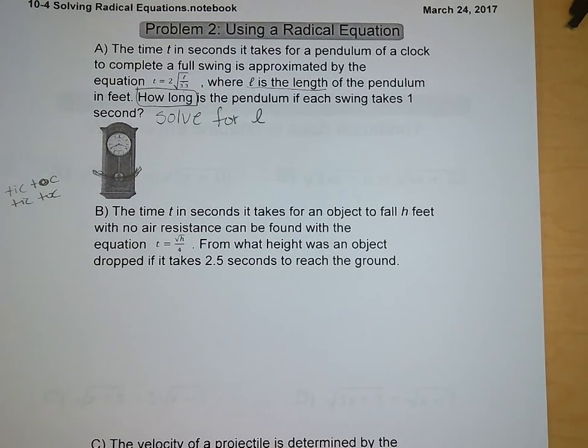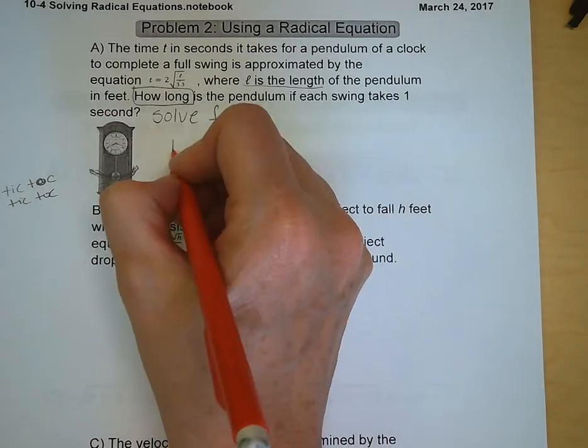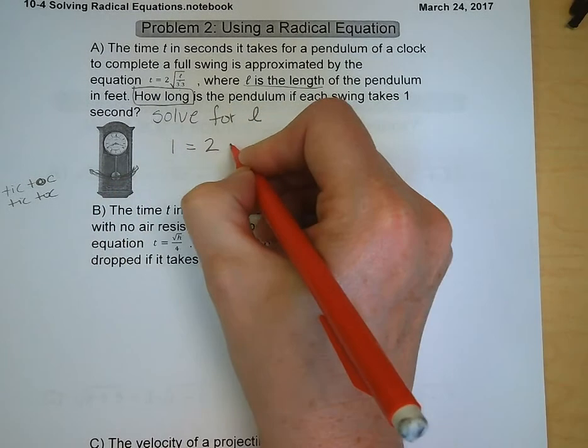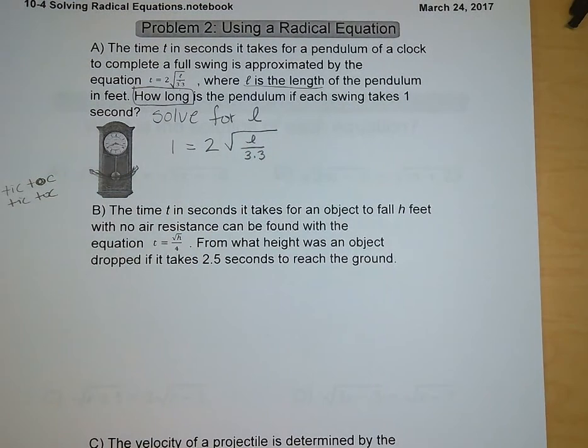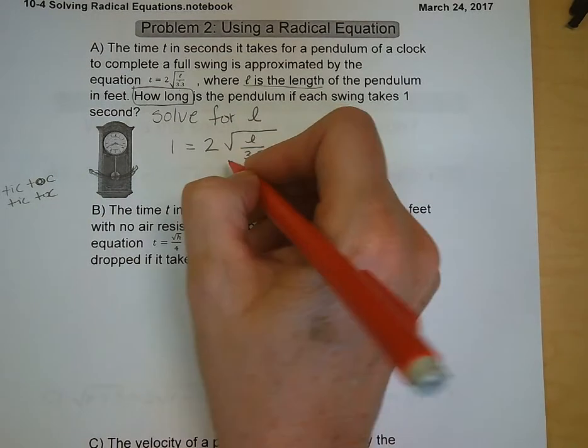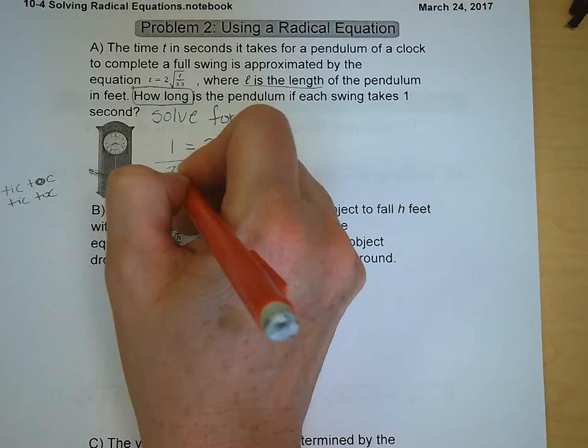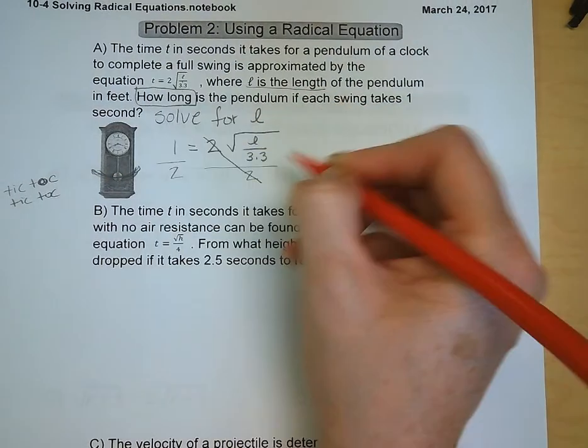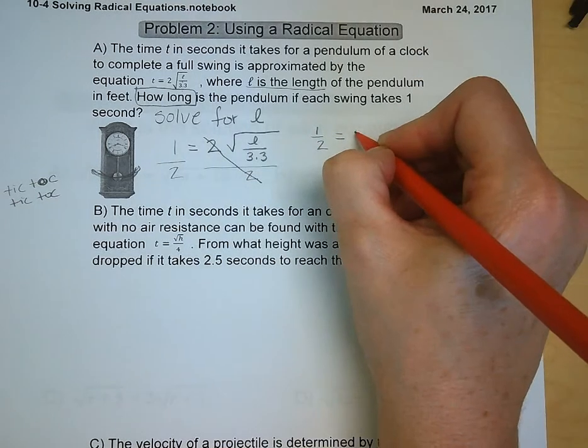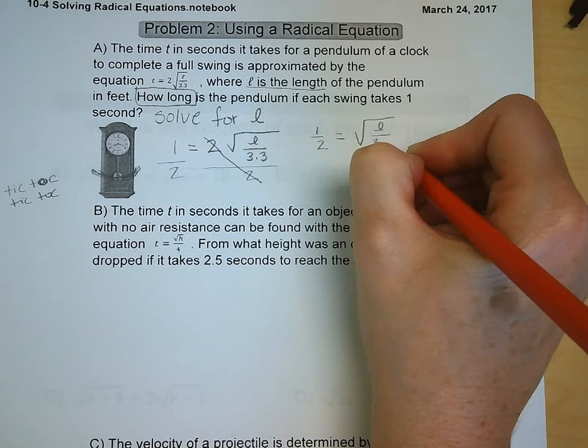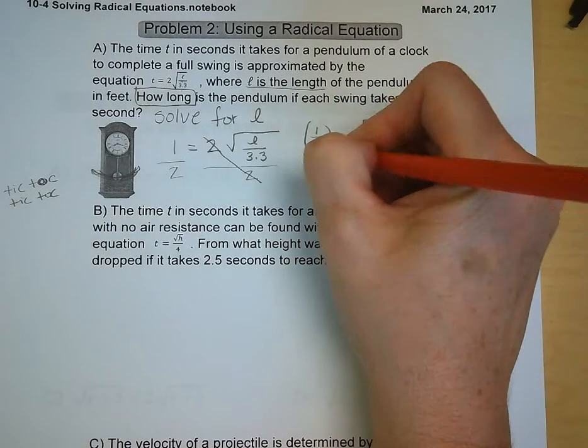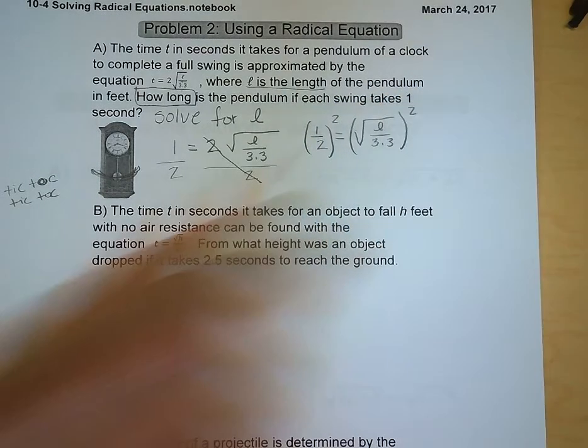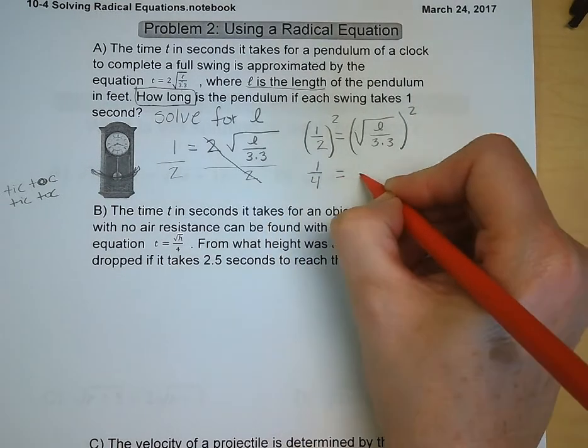So we're solving for l. We know our time, we know t. So we're going to substitute 1 for t. So 1 is equal to 2 times the square root of l over 3.3. So what do we do to get the radical by itself? Well, we need to divide everything by 2. So 1 half is equal to the square root of l divided by 3.3. So we need to square both sides of the equation. And we get 1 fourth is equal to l over 3.3.